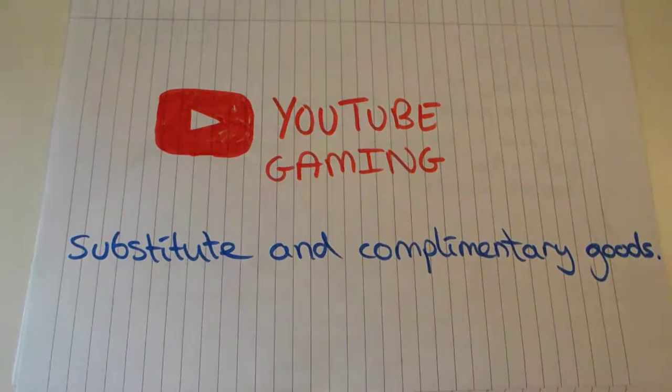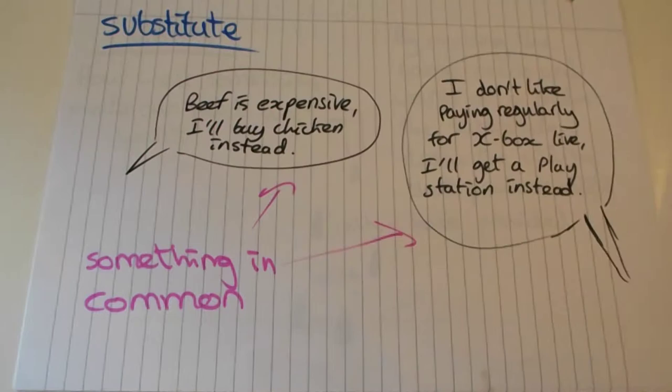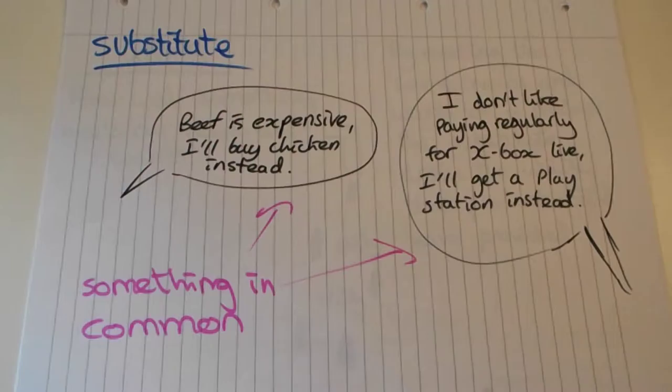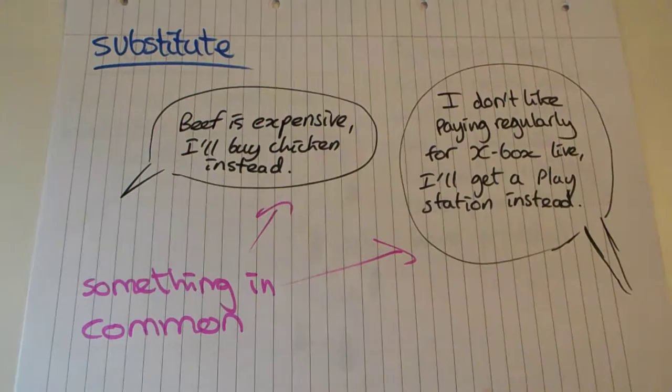Hi, my name is James and in this video I'm going to be talking about YouTube gaming and also substituting complementary goods. A substitute good is a sort of product that you use in place of another. So for example if you thought beef was too expensive and you bought chicken instead, then chicken becomes a substitute for beef and is now a substitute good.